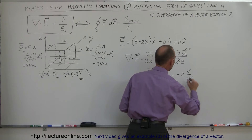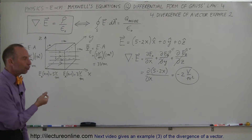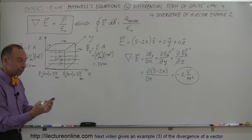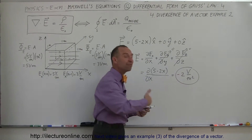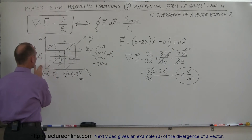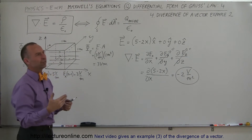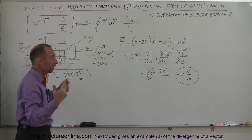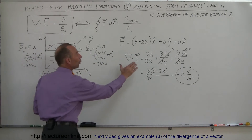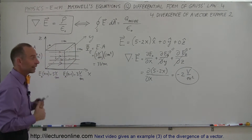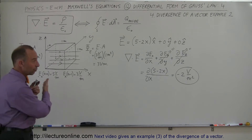The units are volts per meter squared, which is the change in the electric field as we move in the X direction. The field is getting weaker by 2 volts per meter for every meter we travel to the right — 5 volts per meter at the origin, 3 volts per meter at 1 meter, 1 volt per meter at 2 meters. So that's one interpretation of the divergence of the electric field: it tells us how fast the field is changing as a function of position, and here it's changing by the same amount no matter where we are.